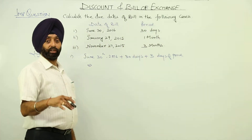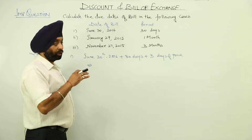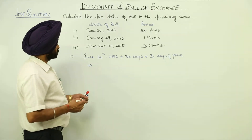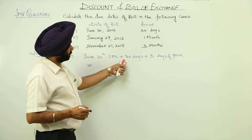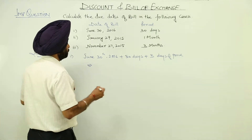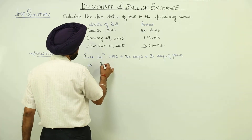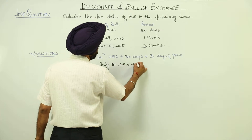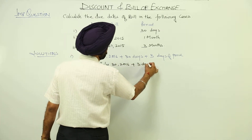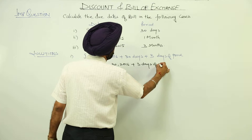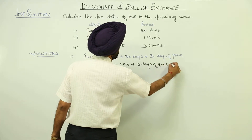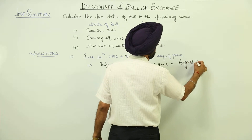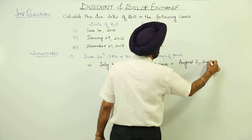If the month is for 28, 29, 30, or 31 days — whatever days there are — we are going to calculate one month only. So now June 30th, we are having 30 days, so it will be July 30th, 2016, plus 3 days of grace. This is equal to August 2nd, 2016.